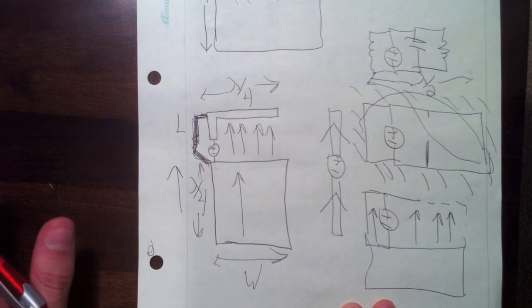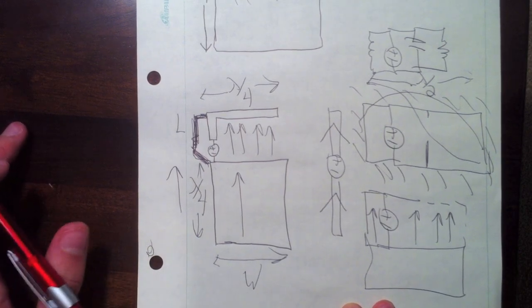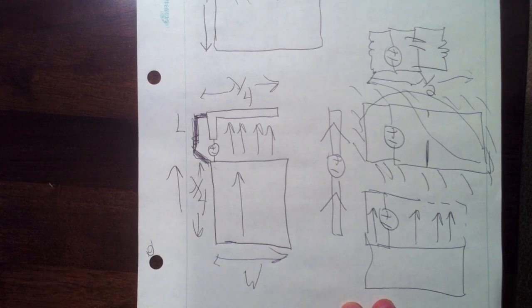As such, its bandwidth is very similar to a dipole or a slot, which is typically on the order of seven percent.